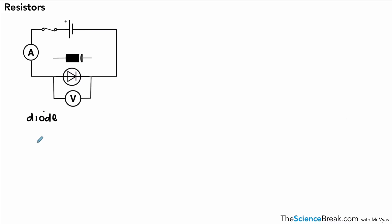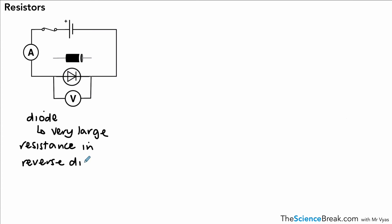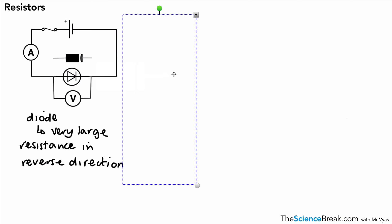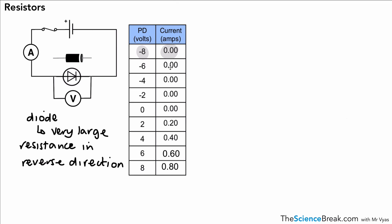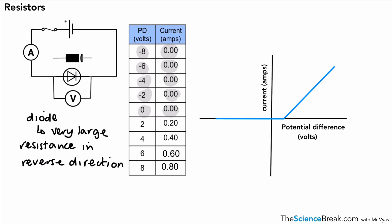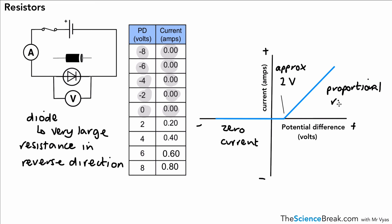The last component is a diode. The circuit is set up the same way, but with the lamp replaced by a diode. A diode has a very large resistance in the reverse direction, so it does not allow current to flow in reverse. In the table of results, all negative values of potential difference show zero current flowing. On the graph, there is zero current for negative potential difference. At approximately one volt in the forward direction, current starts to rise, and the bigger the potential difference the larger the rising current.